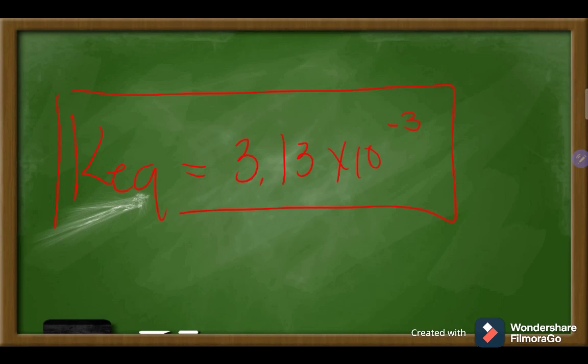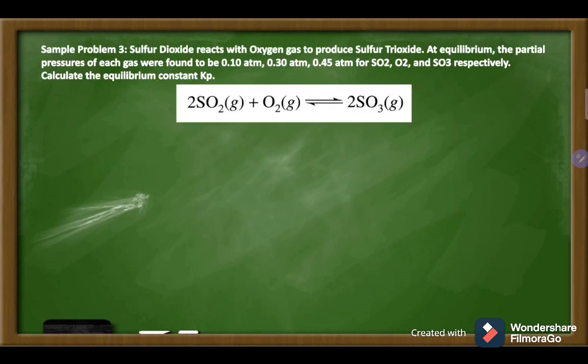Following the two decimal places rule, KEQ equals 3.13 × 10⁻³. That is our equilibrium constant for sample problem number two.